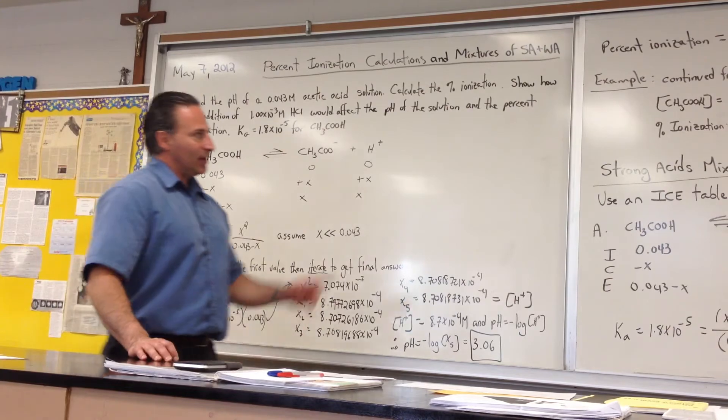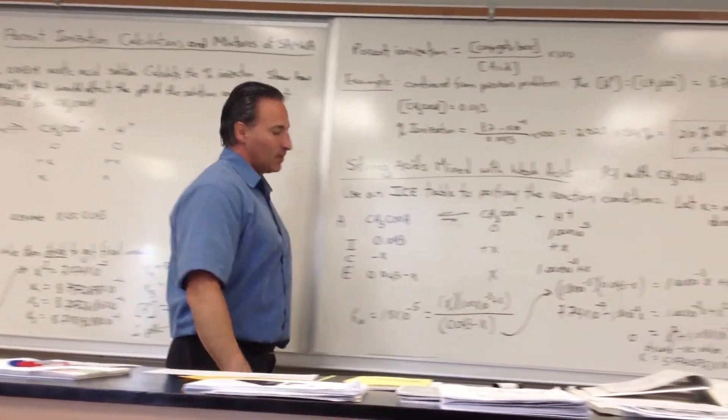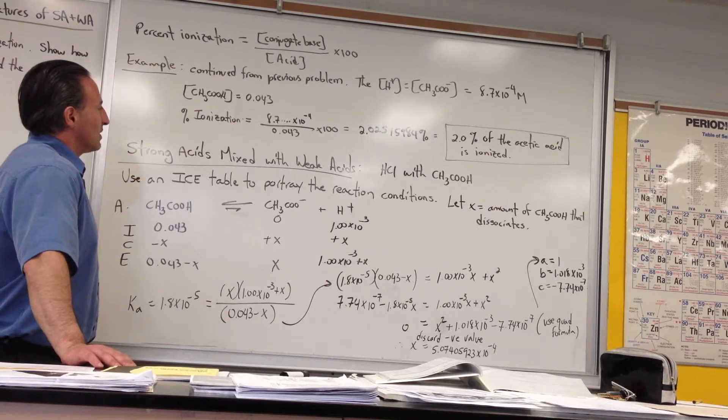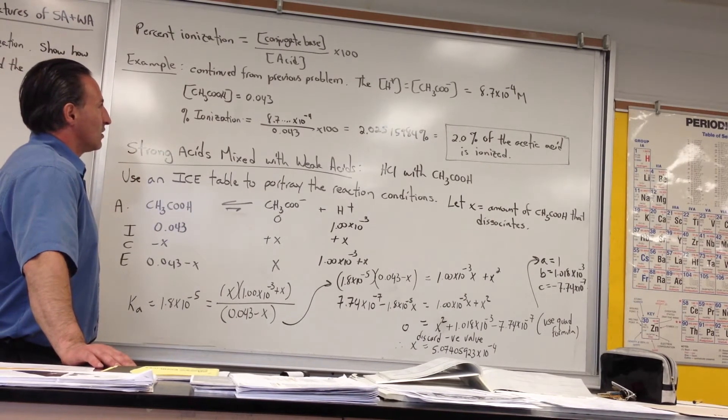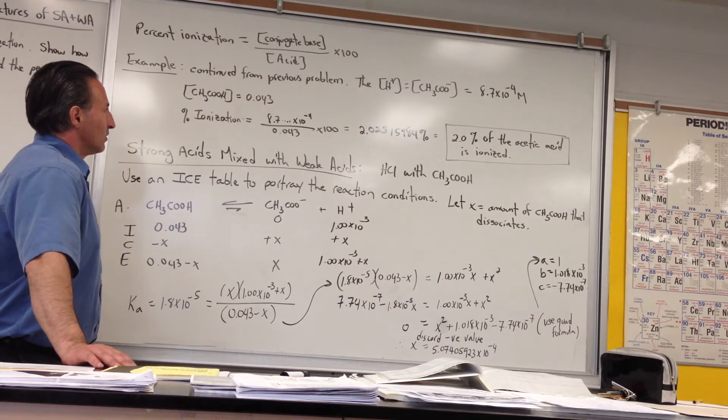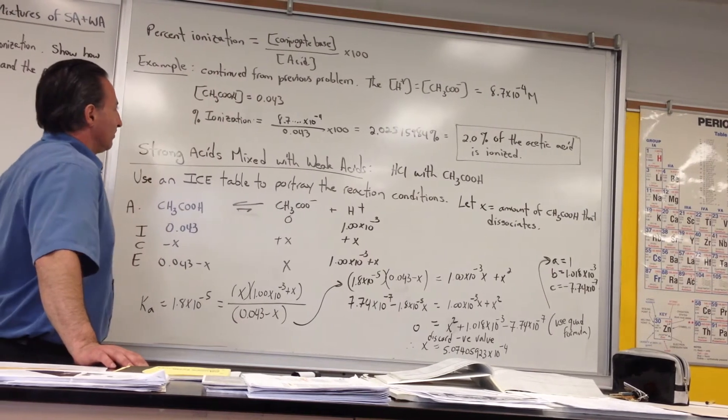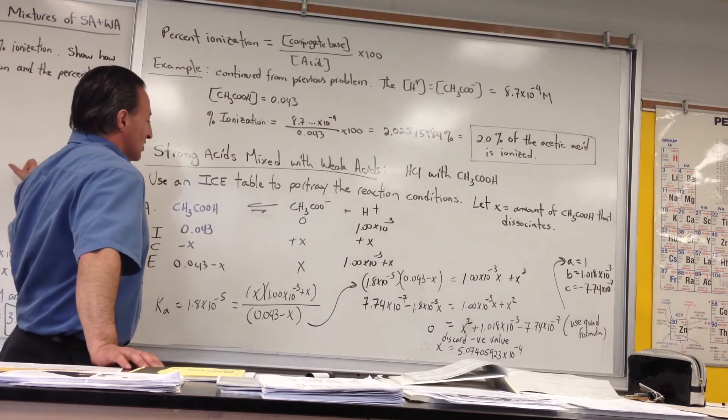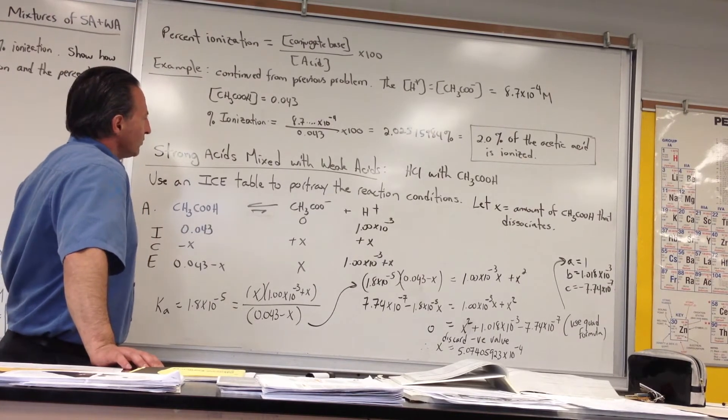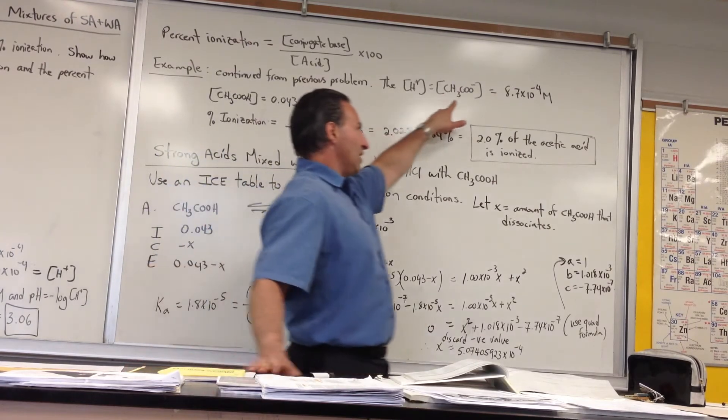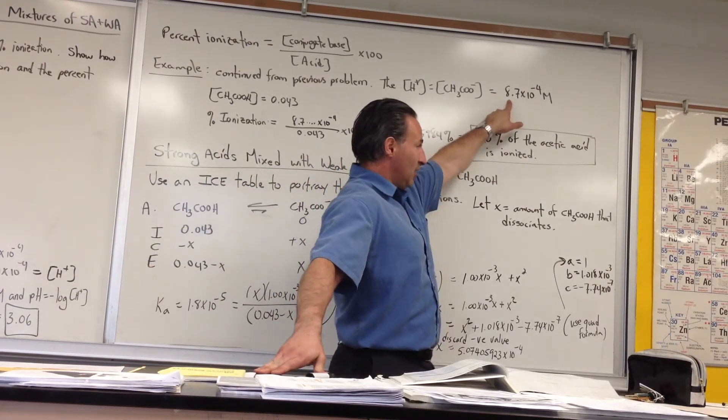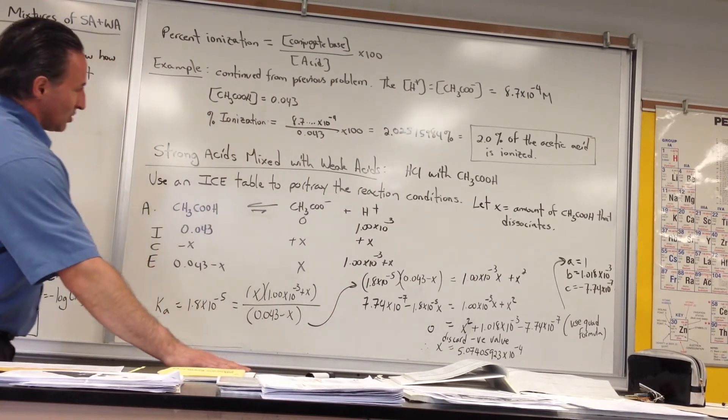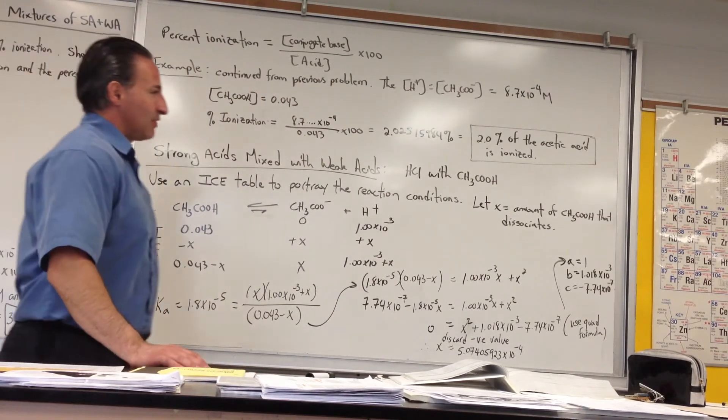To calculate percent ionization, we use the concentration of the conjugate base of the acid versus the initial acid concentration. So A⁻ over HA, if you like, multiply that by 100. I found that the H⁺ concentration equals the acetate ion concentration, which equals 8.7×10⁻⁴ when using the correct number of significant figures.